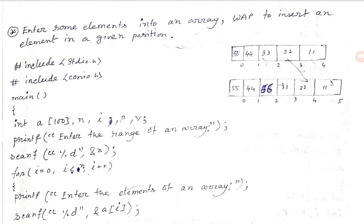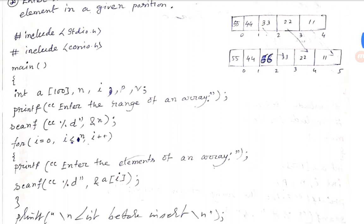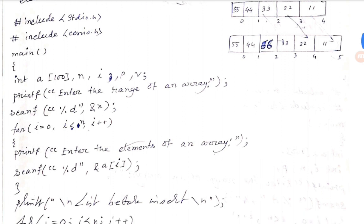Here is the main function. We are going to talk about the header file — include stdio.h, conio.h — and the main function and the declarations. Here we have int a[] with the array size, and variables i, p, and v.